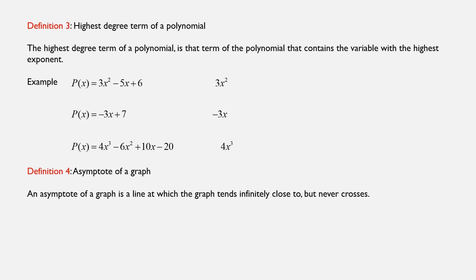Third definition: Highest degree term of a polynomial. The highest degree term of a polynomial is that term which contains the variable with the highest exponent. For example, in the polynomial 3x² minus 5x plus 6, the highest exponent is the square, so the highest degree term is 3x². Similarly, in the polynomial 4x³ minus 6x² plus 10x minus 20, the highest degree term will be 4x³.